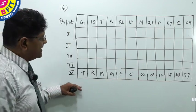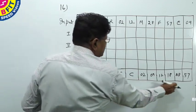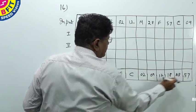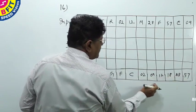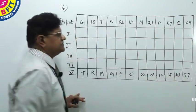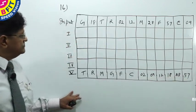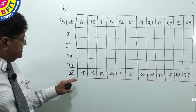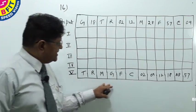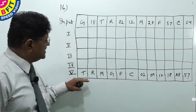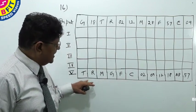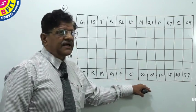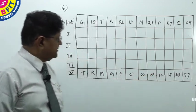Then what is next? There are 6 numbers: 2, 9, 12, 18, 28, 57. The numbers are arranged in ascending order. So the logic of the machine is very simple — the alphabets are arranged in descending order and the 6 numbers are arranged in ascending order.